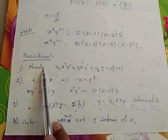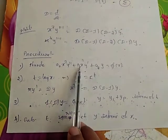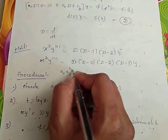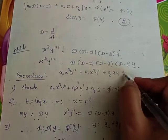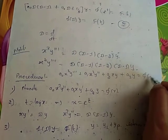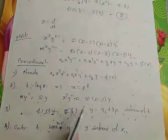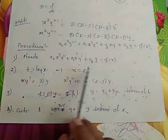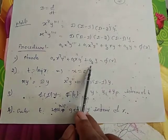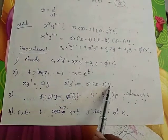Let me explain the procedure once more. The given equation should be in standard form. For second order: A₀X²Y'' + A₁XY' + A₂Y = φ(X). For third order: A₀X³Y''' + A₁X²Y'' + A₂XY' + A₃Y = φ(X). After writing the standard form, take the substitution: T = log X, X = e^T, XY' = DY, X²Y'' = D(D−1)·Y.